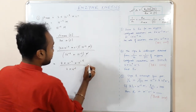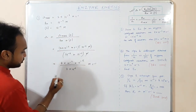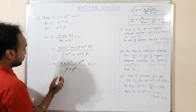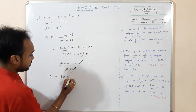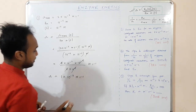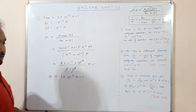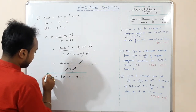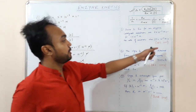So this simplifies to 2×10⁻³ × 10⁻⁶ divided by 2×10⁻⁶. The 2s cancel out, giving a rate of 1×10⁻³ mol·s⁻¹. This is a very simple numerical and it was asked in CSIR NET December 2015 as a 4-mark question.